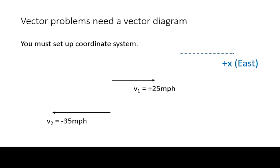Notice that the 35 miles per hour is actually faster. It has greater magnitude than 25 miles per hour. The negative sign is merely the assignment of the direction.